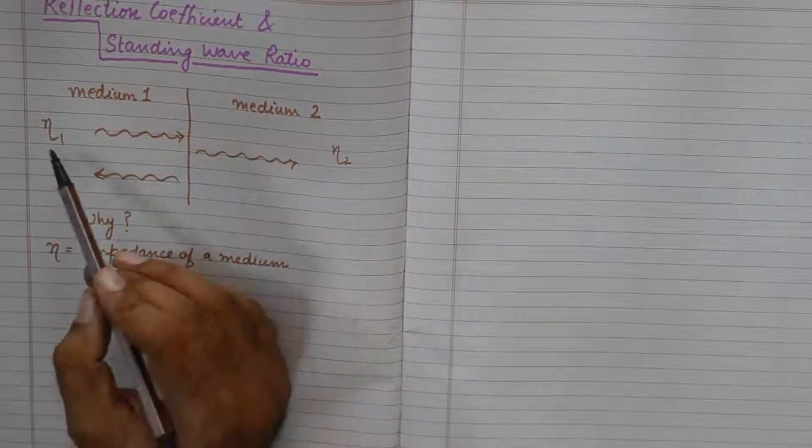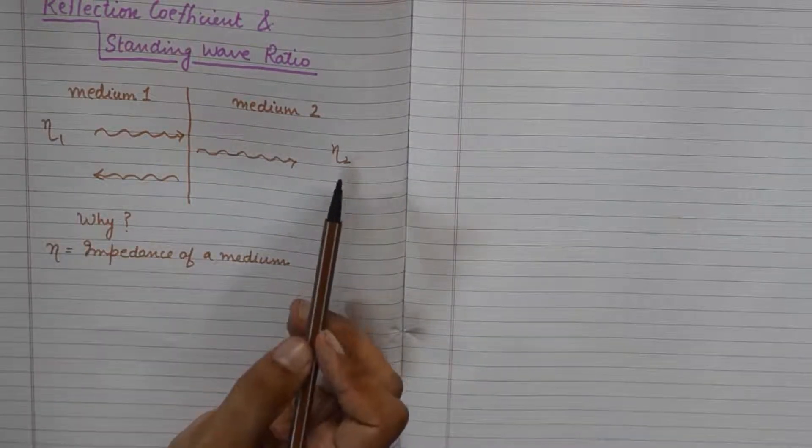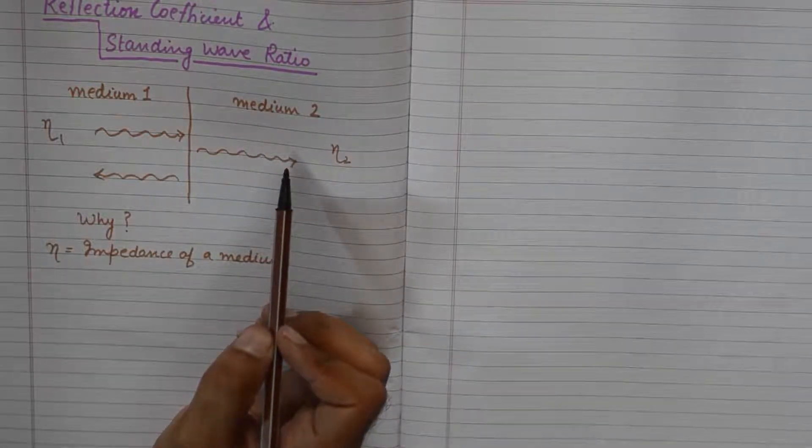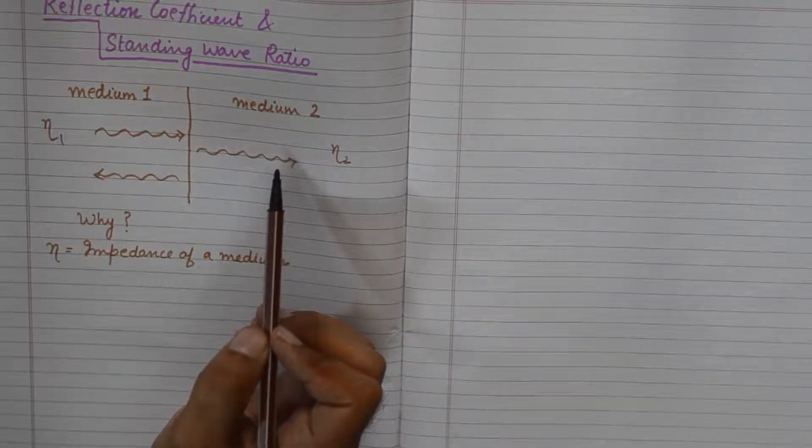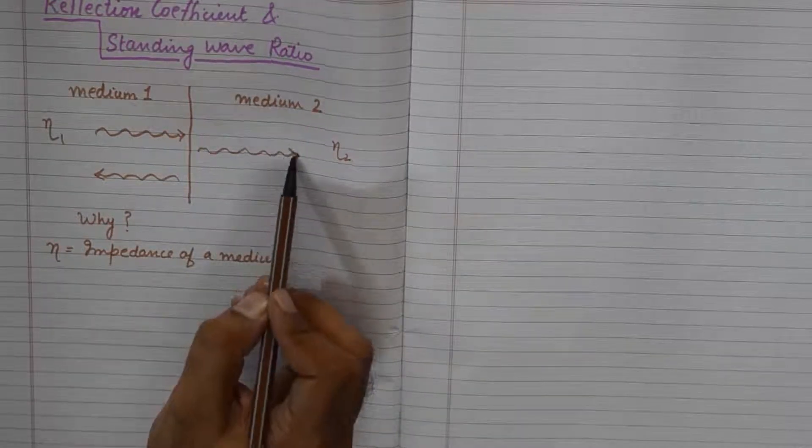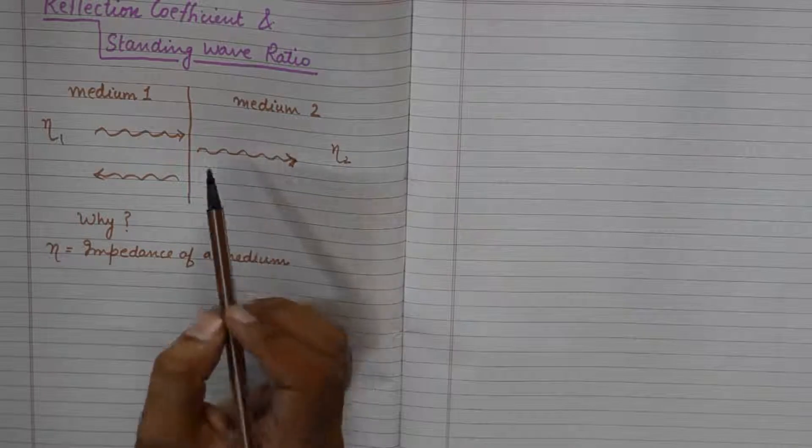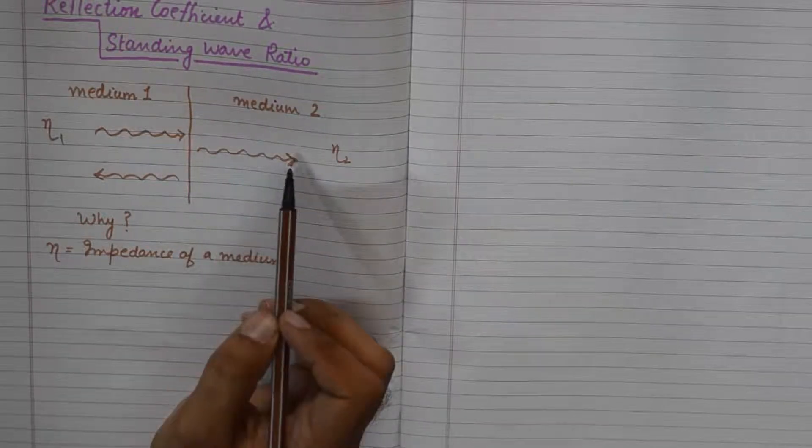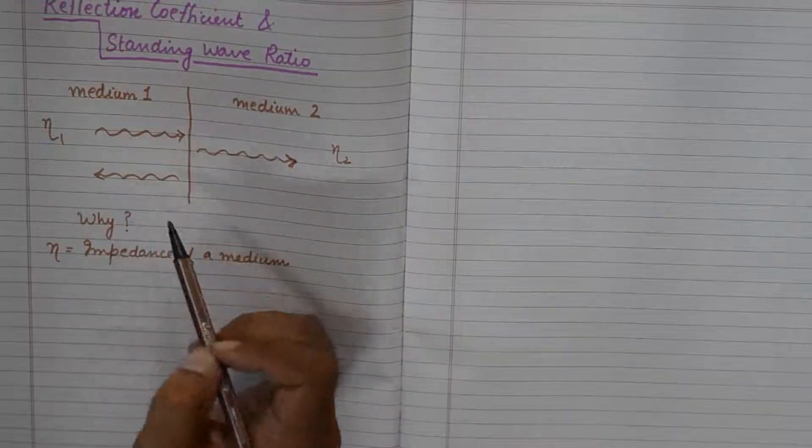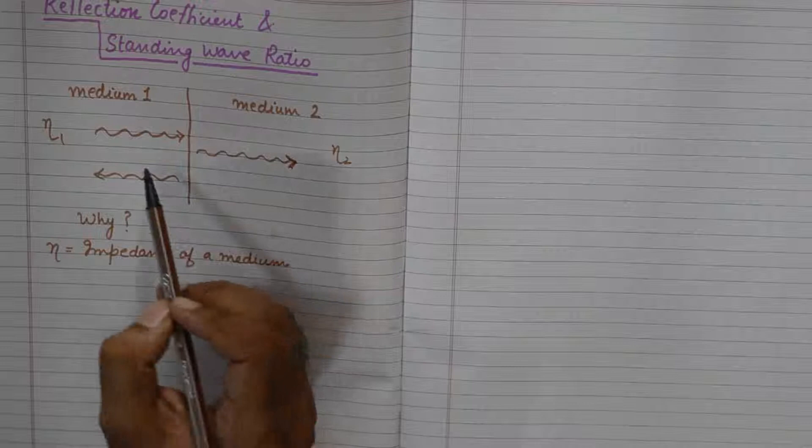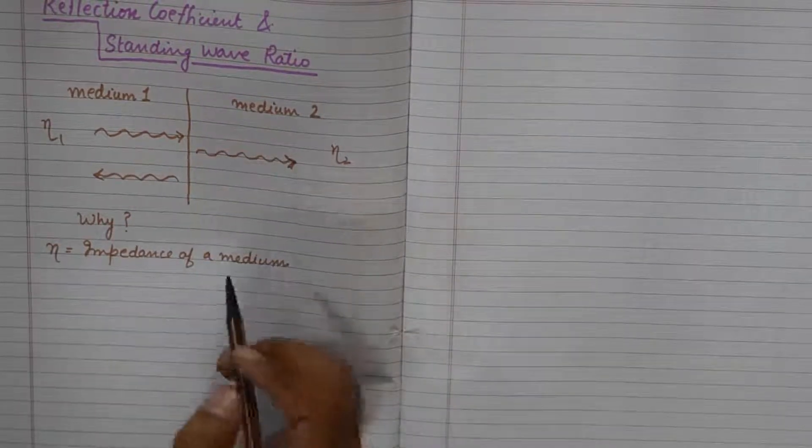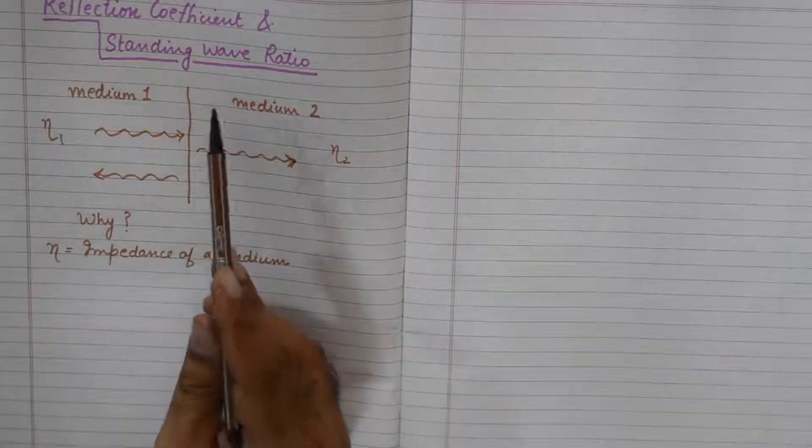For example, medium 1 has impedance of eta 1, medium 2 has impedance of eta 2. When this wave goes into medium 2, it finds itself into a different zone that bothers the wave. And some of it gets adjusted and passes through the medium 2 but some of it reflects back. And the calculation of this reflected wave from the medium 2 is known as calculation of reflection coefficient.